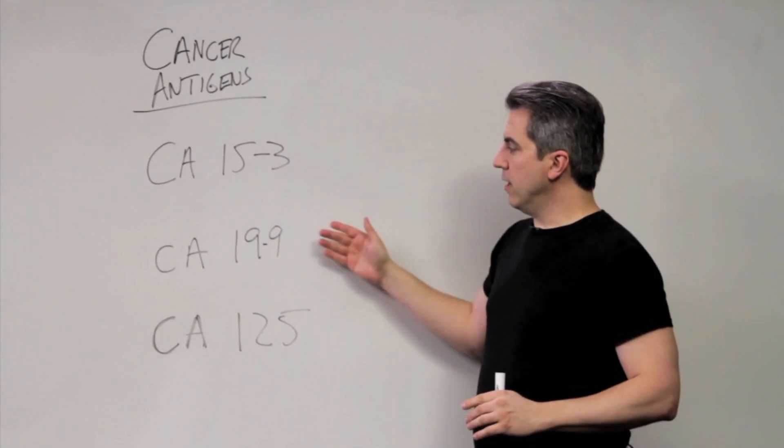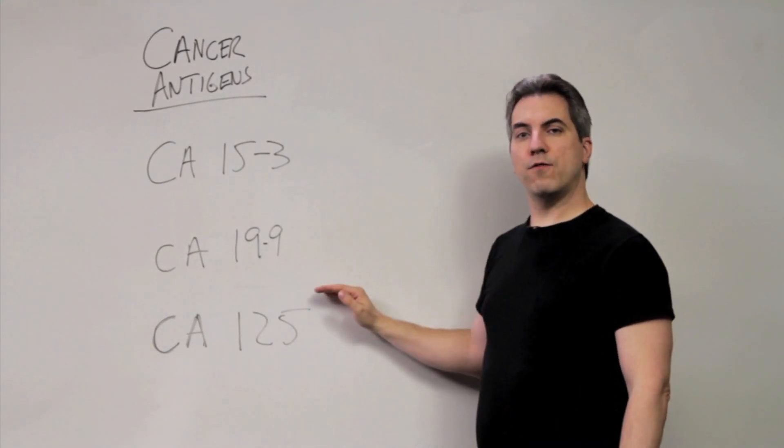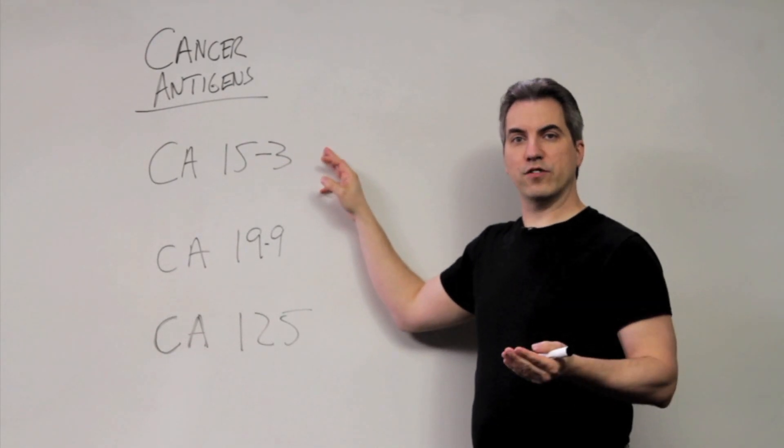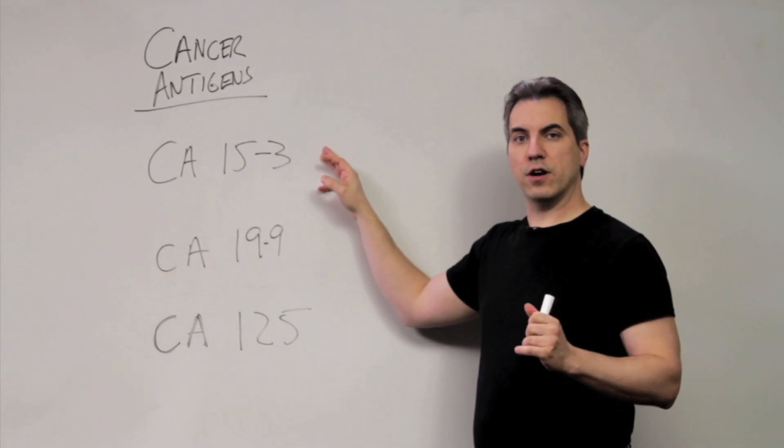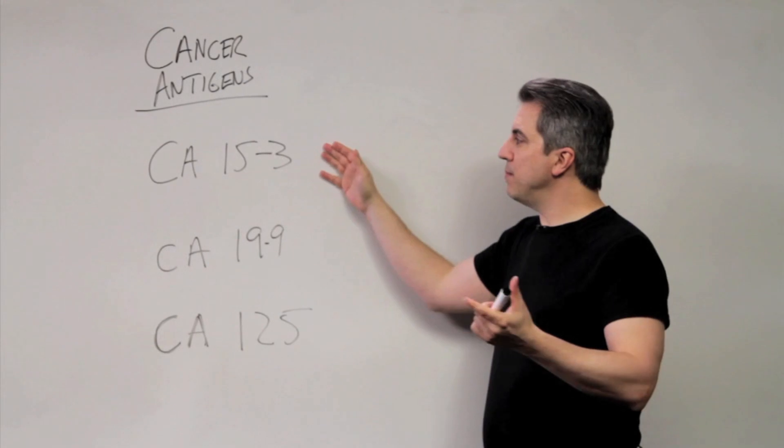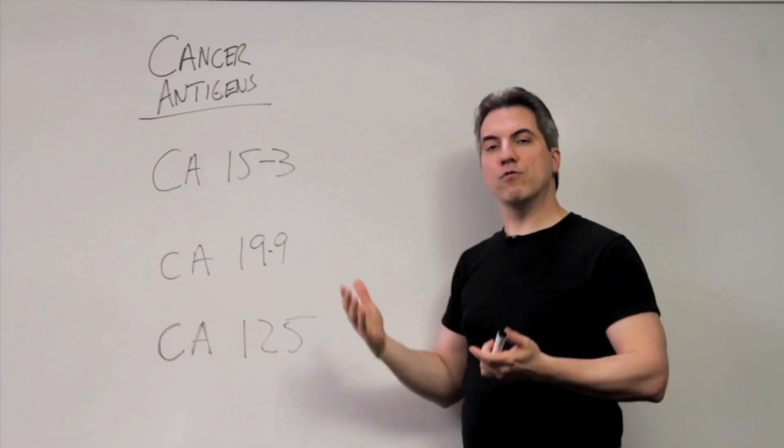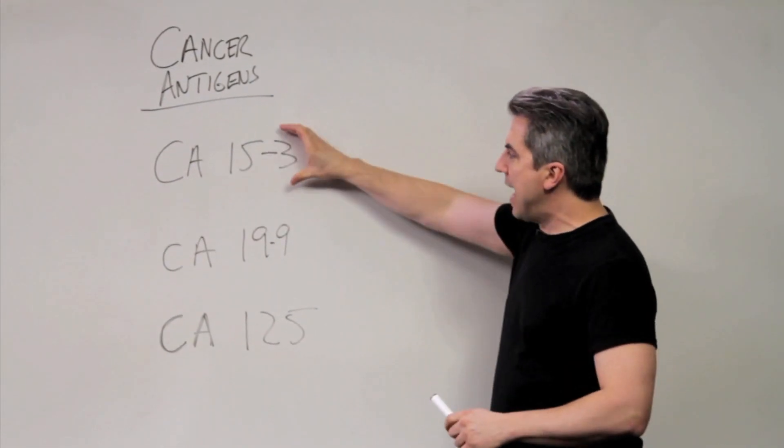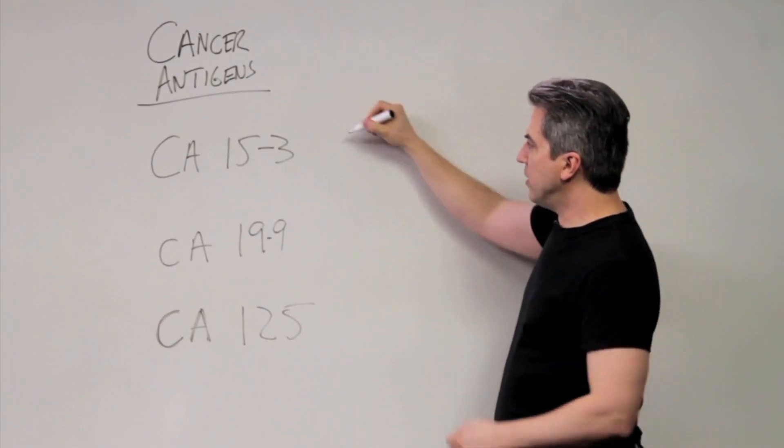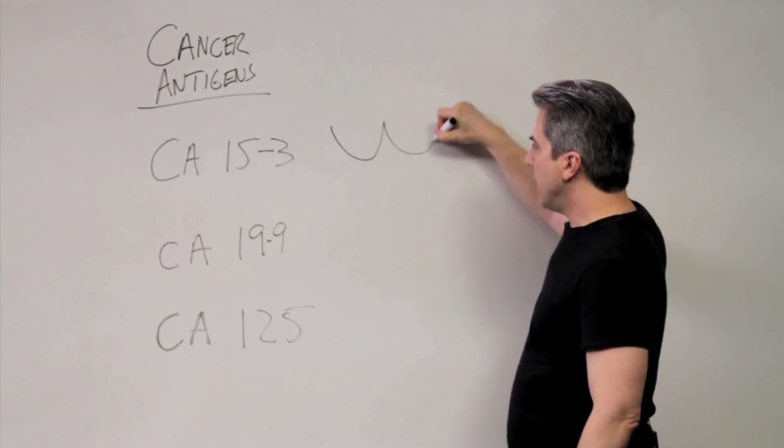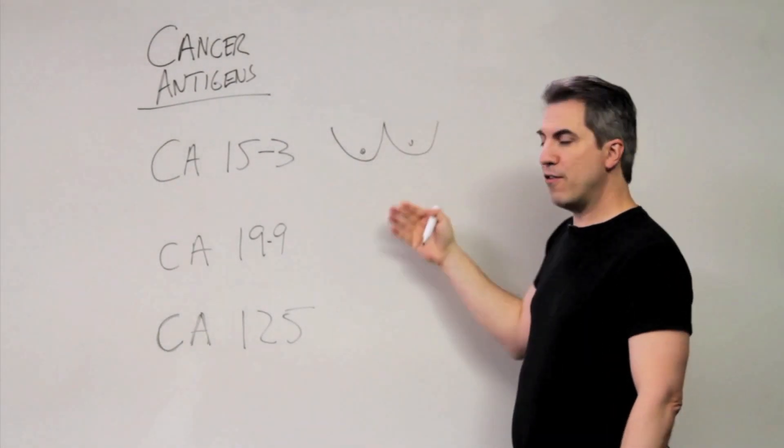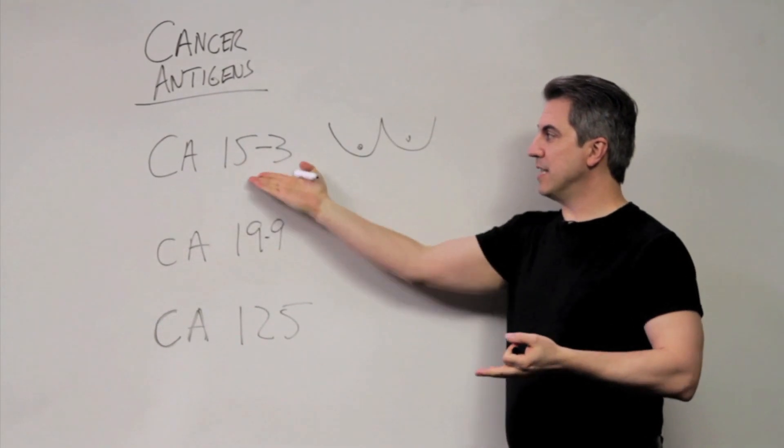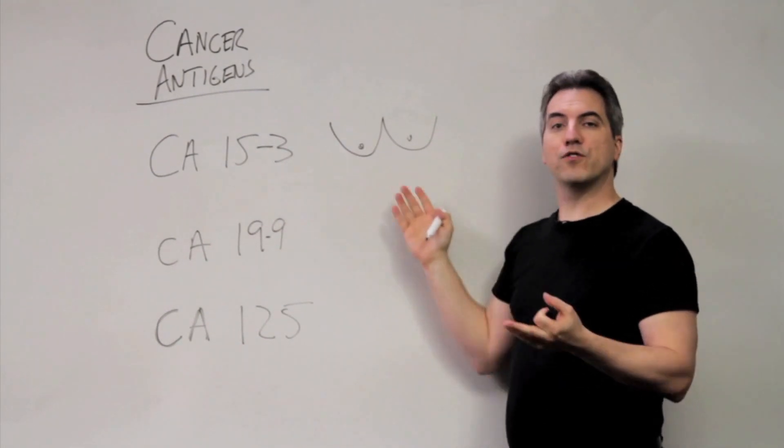And they like these three. Students have a little trouble remembering what they're for. So CA 15-3, well, this is for breast cancer. We use it for following breast cancer. So what I like to do is I like to make the name help me remember what it's for. So CA 15-3, take the three and turn it sideways. If I turn the three on its side, notice we now have breasts for breast cancer. So now you can't miss it. Every time I see CA 15-3, I'll remember it's for breast cancer.